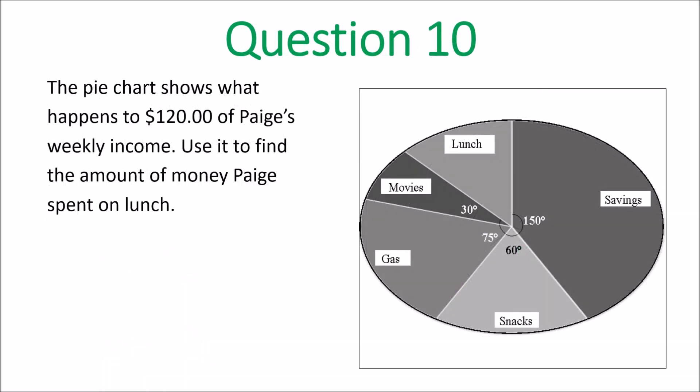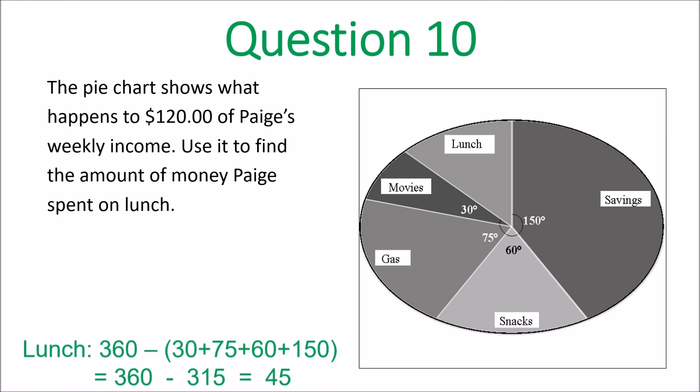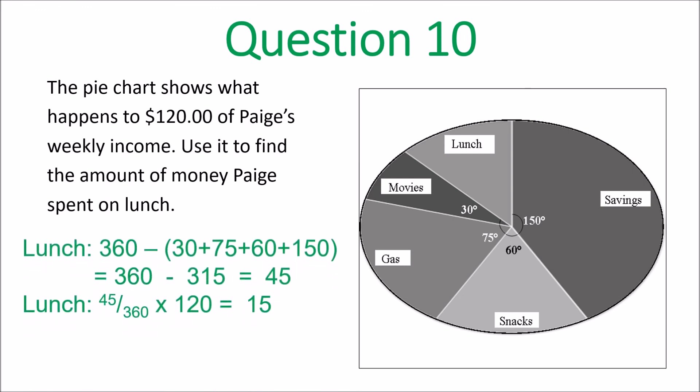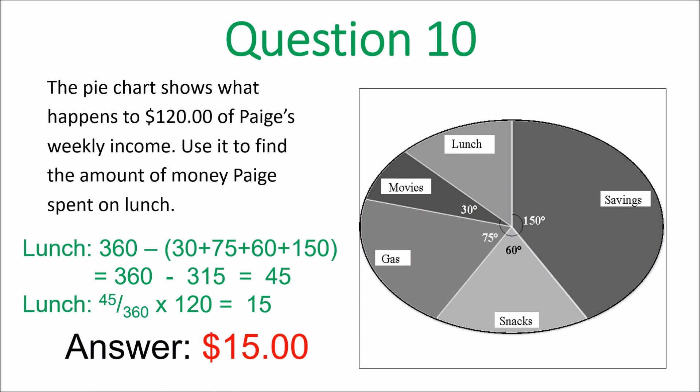Question 10. The pie chart shows $120 as Paige's weekly income. So let's add up all the degrees — you get 315. 360 minus 315 is 45 degrees. 45 over 360 times 120, so that's $15.